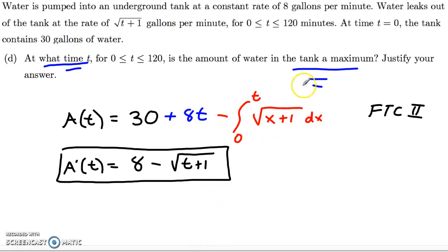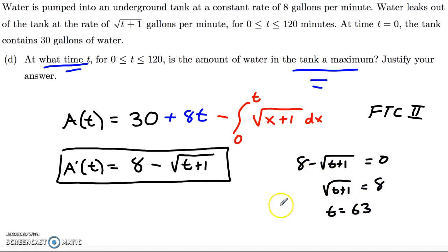Now, of course, if I want to know when it is at a maximum, I'm going to want to take that derivative and set it equal to 0. So we'll take 8 minus the square root of t plus 1. And that will happen any time square root of t plus 1 equals 8, which means t has to equal 63. So if we think about what the sign chart is going to look like for this derivative, starting at 0 and running all the way up to t equals 120 at the top of our domain here. Oops, excuse me, 120.